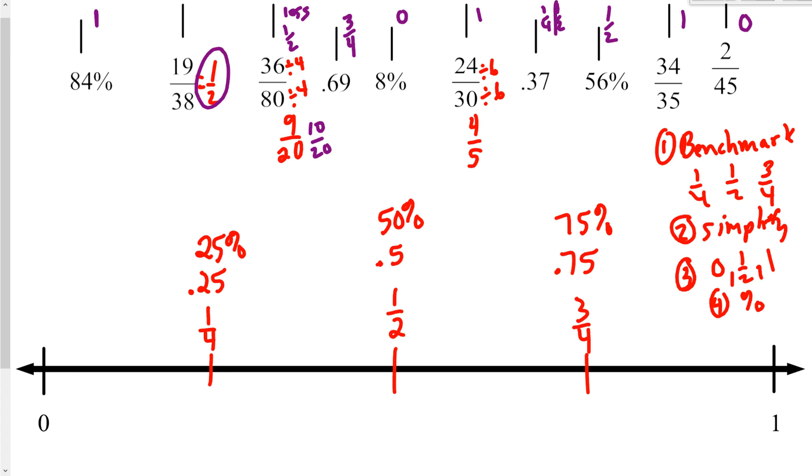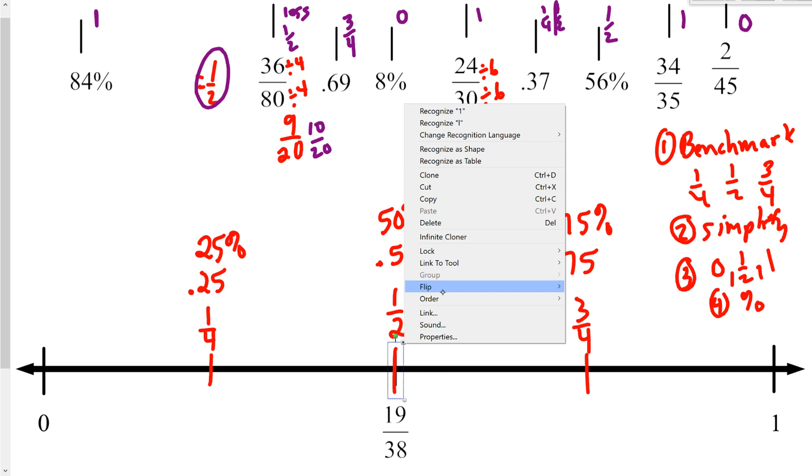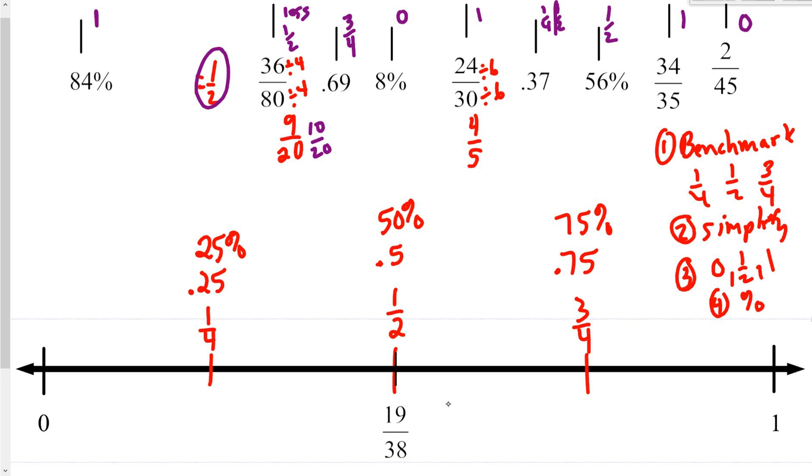So I'm going to grab some of the first obvious ones, like 19/38 is one-half, so I'm just going to put that right on there. And then I look for some other ones that might be standing out. 34/35, that's close to one whole, so I'm going to put that up there. My 2/45, well, that's pretty small, so I'm going to put that down near zero.